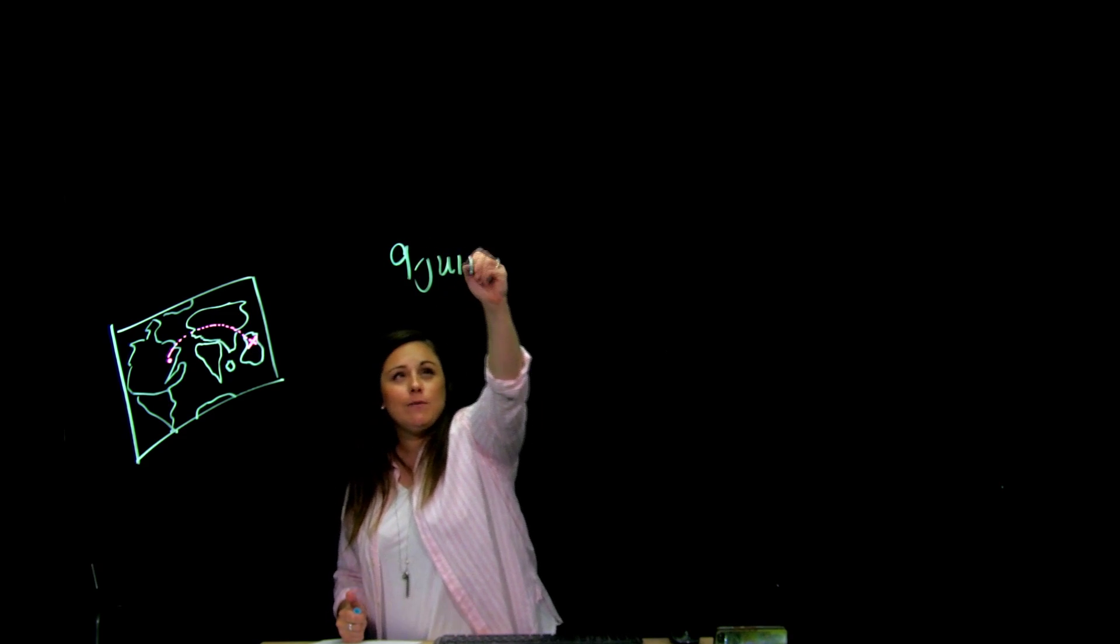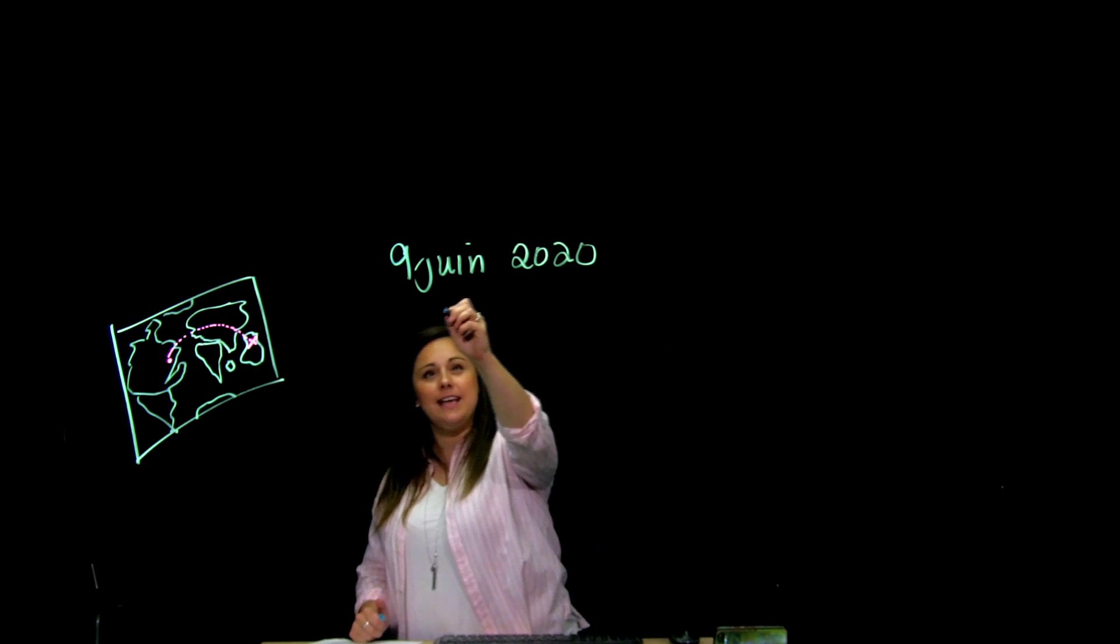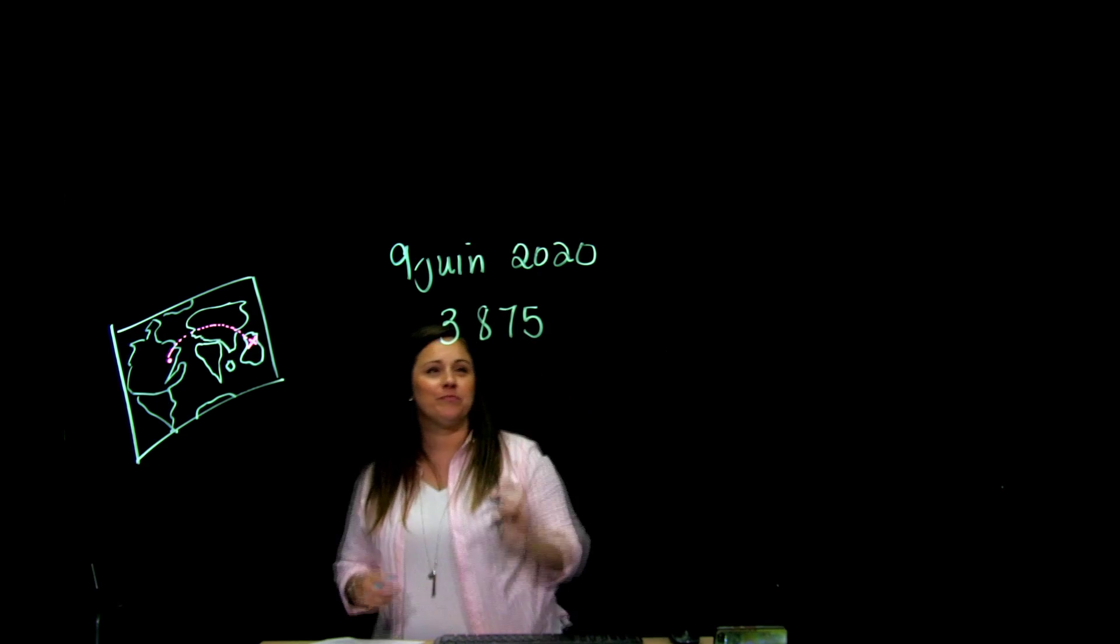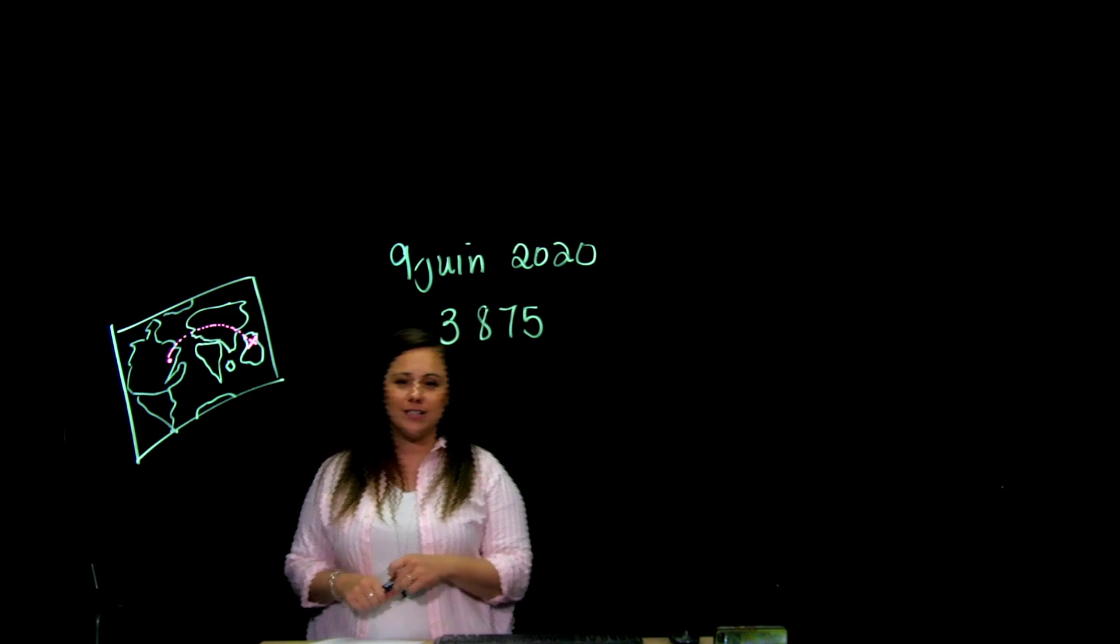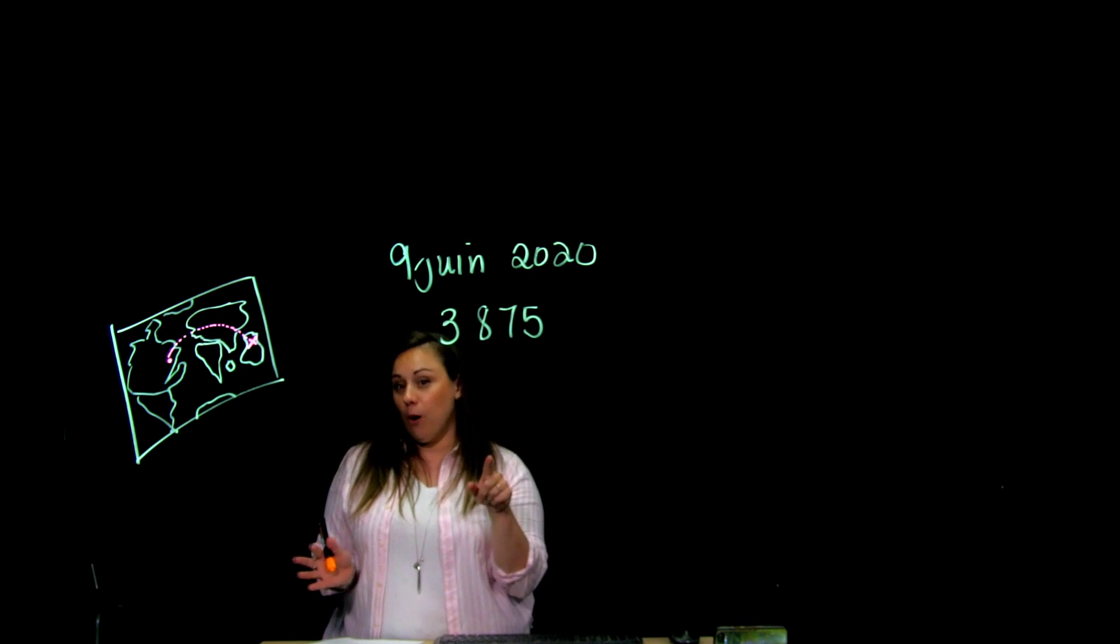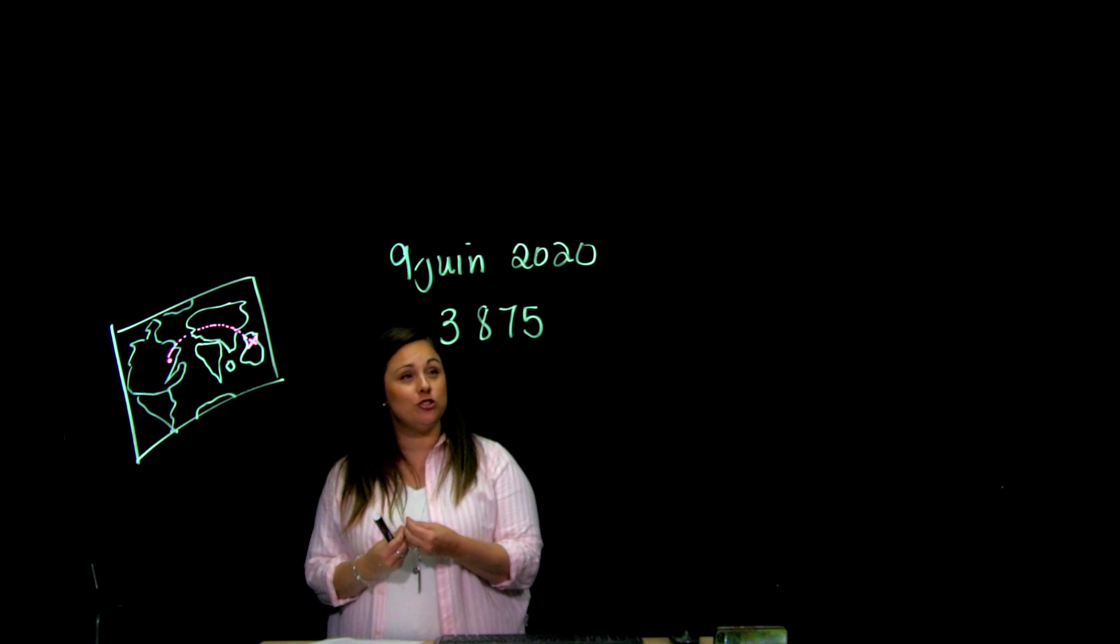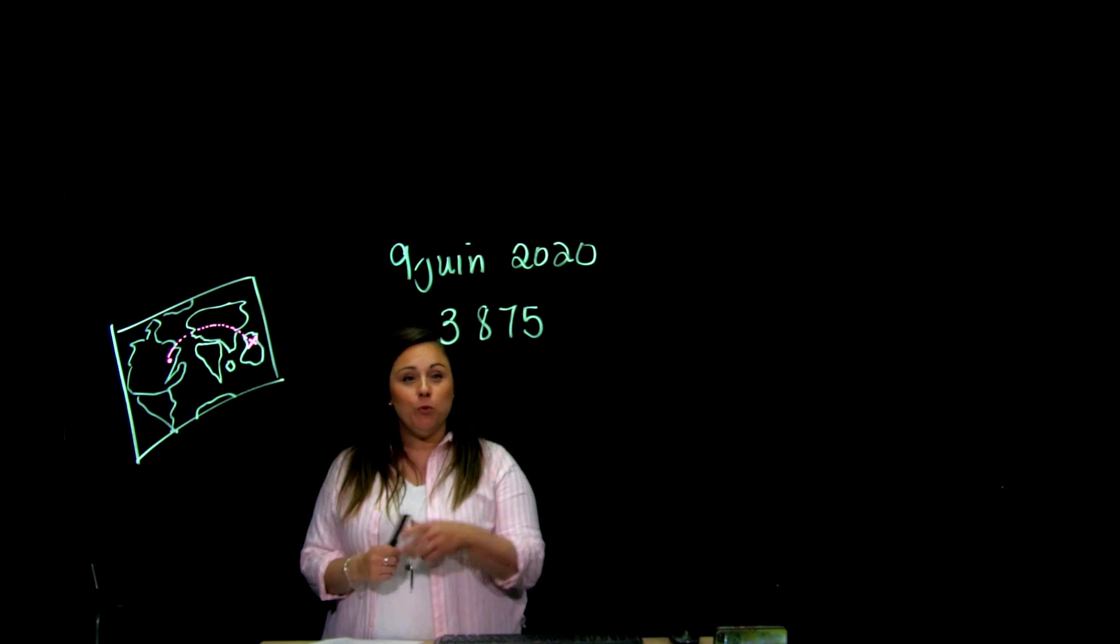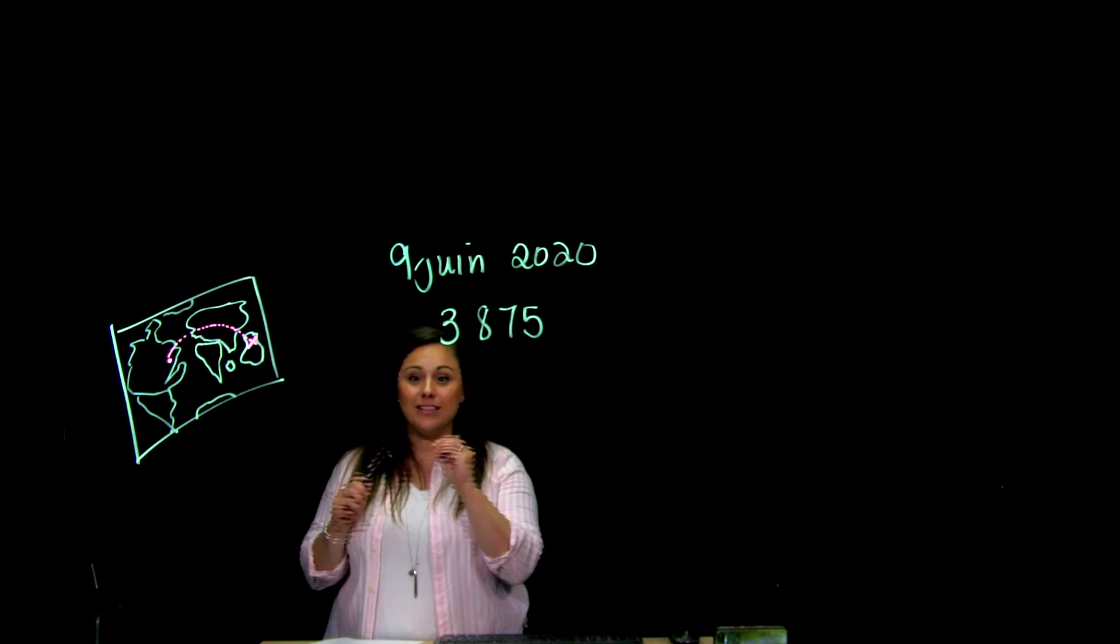Alors, commençons avec le nombre du jour. On est le 9 juin 2020, et mon nombre du jour est 3875. Alors, ce que je veux faire avec toi, c'est, premièrement, on va le décomposer, tu t'en mets à bien pour faire ça. Si j'étais toi, je ferais pause, et j'essaierais de décomposer, de sortir la valeur de chacune des positions pour bien comprendre.